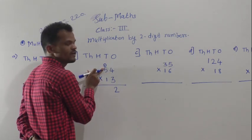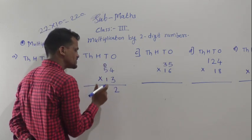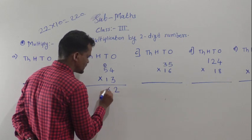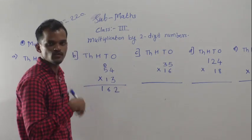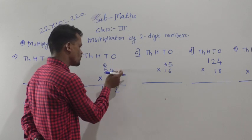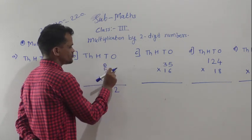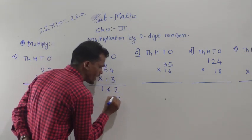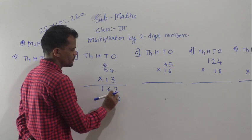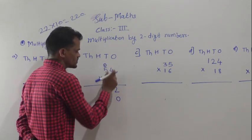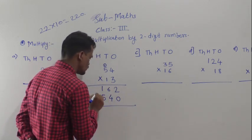Now, 3 fives are 15, and with 1 carry that means 16. So write 16 here. We have multiplied 54 by 3. Next step: multiply 54 by the tens digit. Before multiplying 54 by 1, write 0 at the ones place and then multiply. 1 four is 4, 1 five is 5.